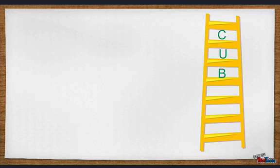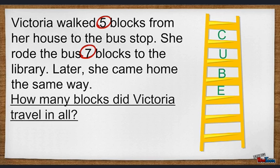E stands for evaluate. Let's evaluate what steps to take. Let's start with Victoria's walk to the bus stop — she walks five blocks from her home to the bus stop. From the bus stop it takes seven blocks to get to the library. Seven plus five equals twelve. When she returns home she takes the same way.